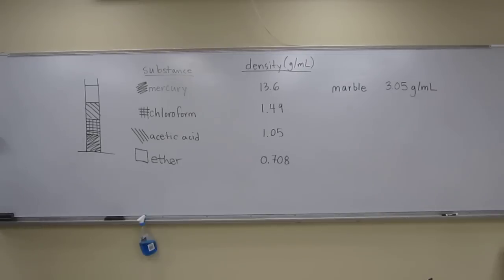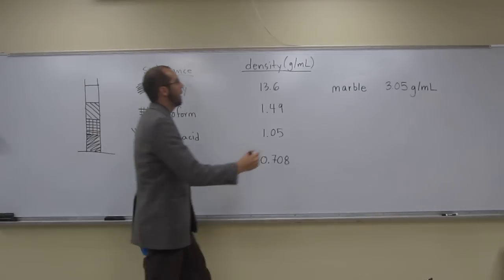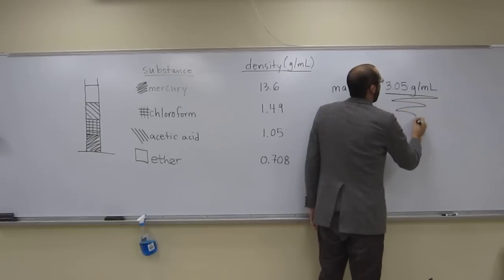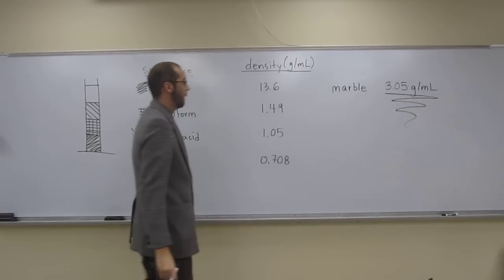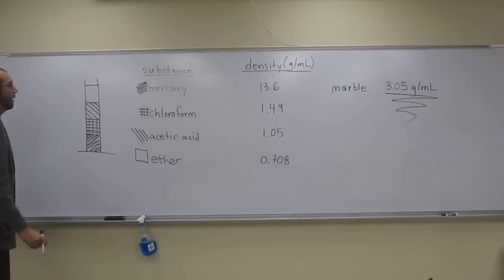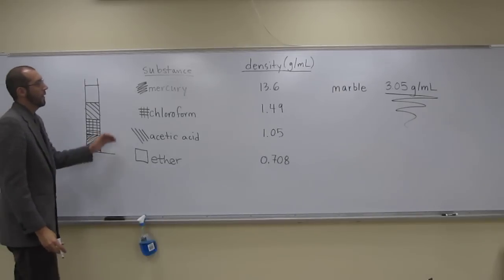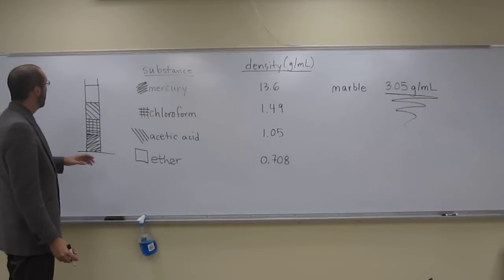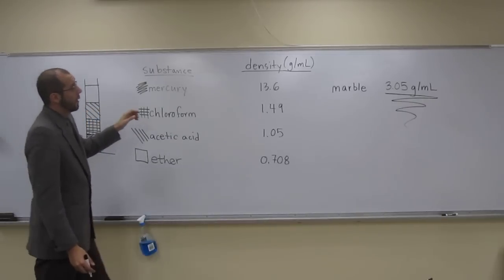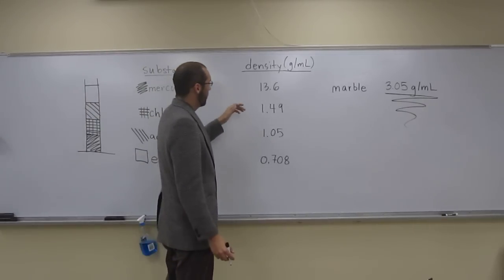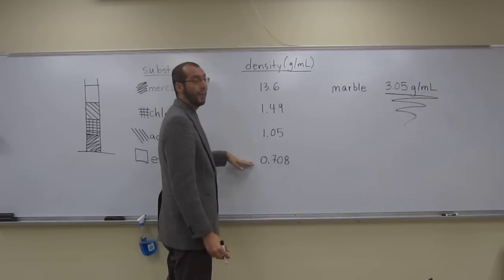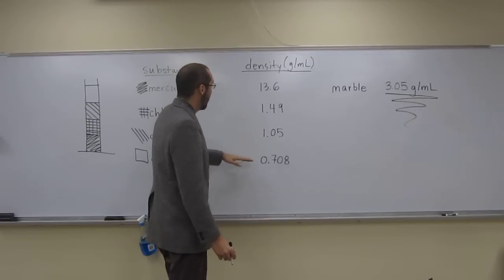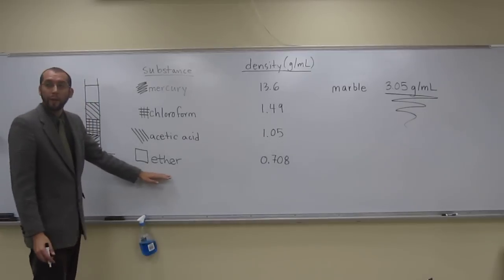Okay, so where does this marble come to rest? Its density is 3.05 grams per mL. We've got to look at these densities here. It's going to go through the liquids that it has a higher density than.